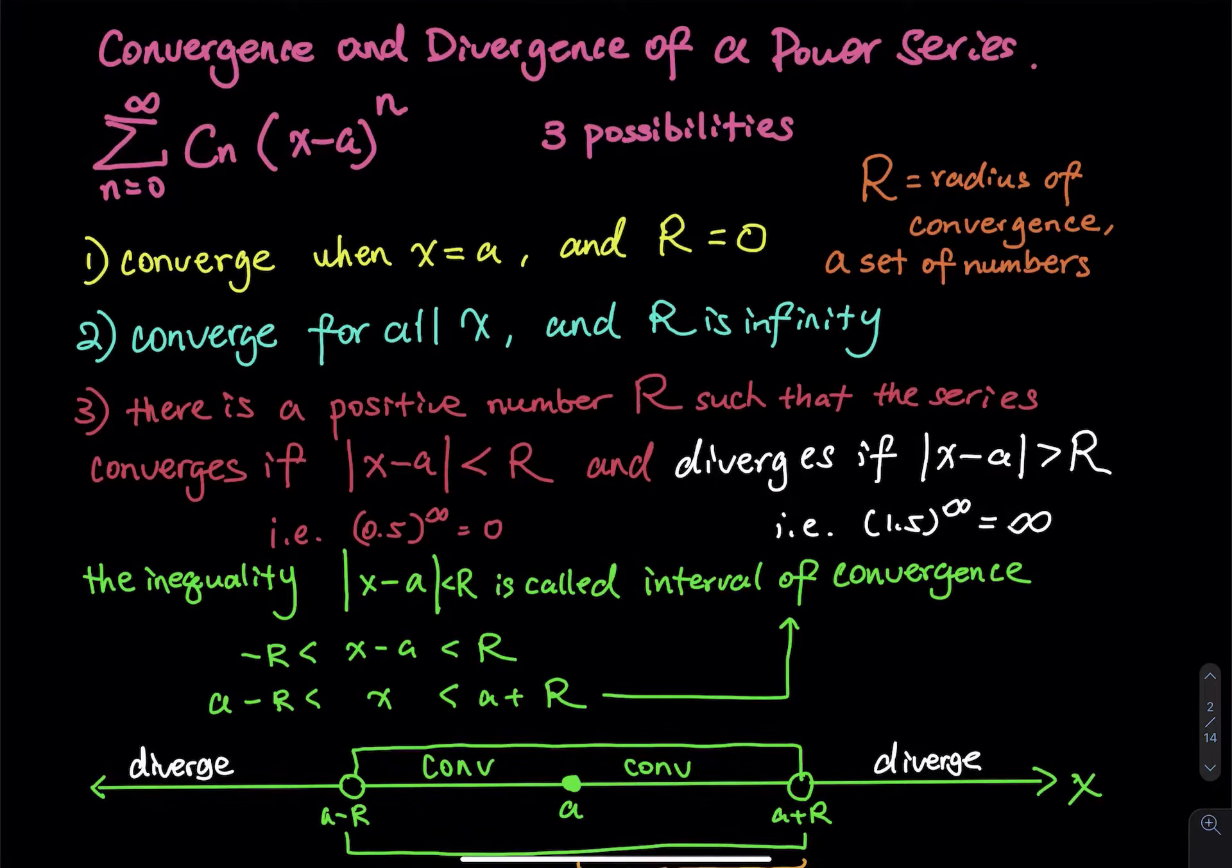For a power series, what we are thinking about is what x value makes the power series converge. When we do that, we have to determine the interval of convergence and radius of convergence.